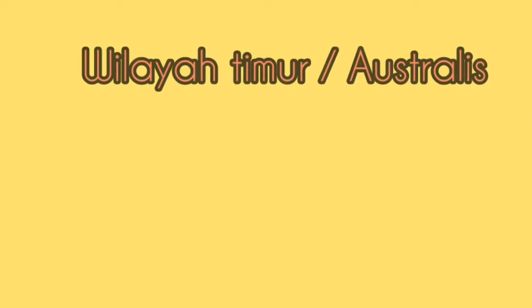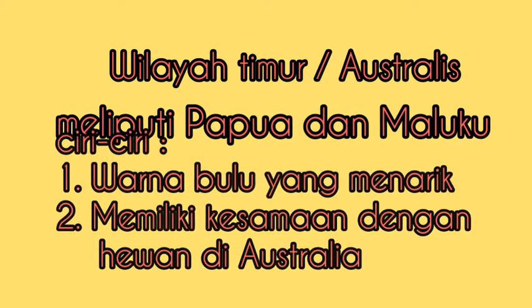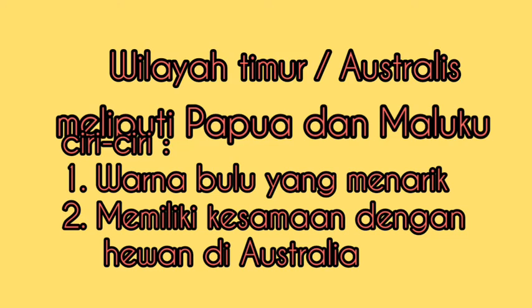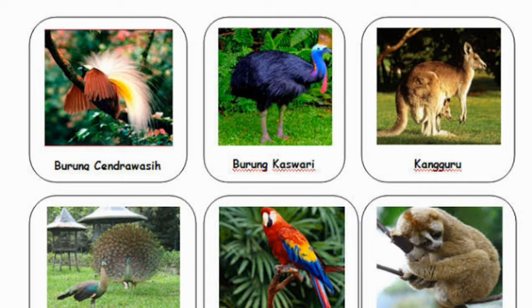Selanjutnya yang nomor tiga, di wilayah timur atau Australis, meliputi Papua dan Maluku. Biasanya kalau jenis burung, warna bulunya sangat menarik. Yang kedua, memiliki kesamaan jenis hewannya dengan hewan-hewan yang ada di benua Australia. Ini adalah contoh binatang atau hewan yang ada di wilayah Australis. Bisa kita lihat beberapa hewan jenis burung ini memiliki bulu yang sangat indah.